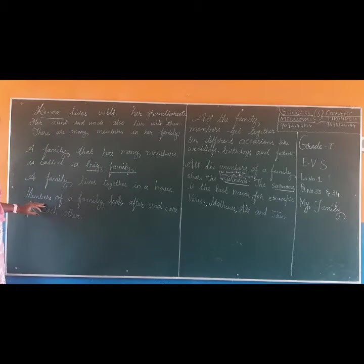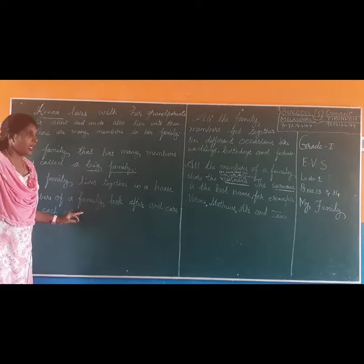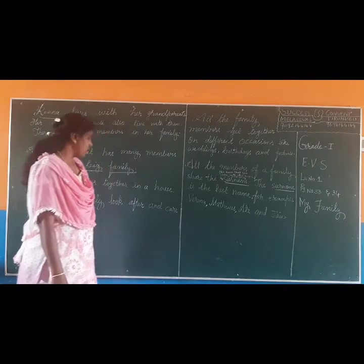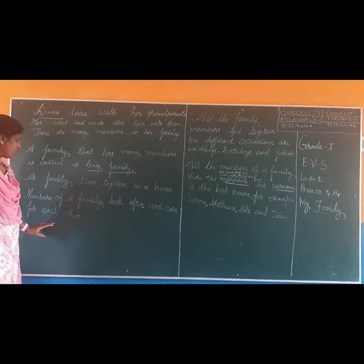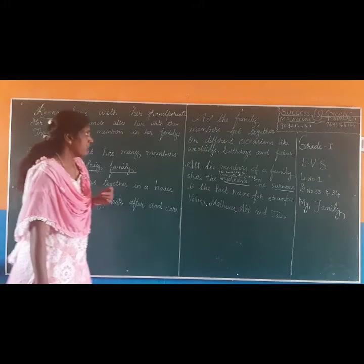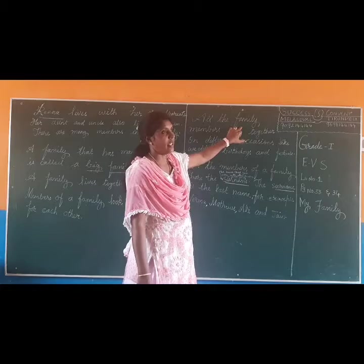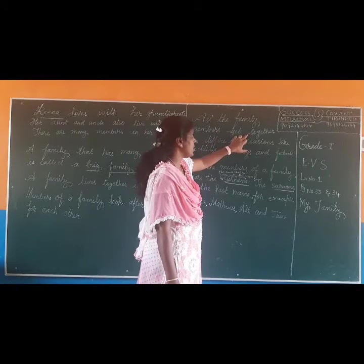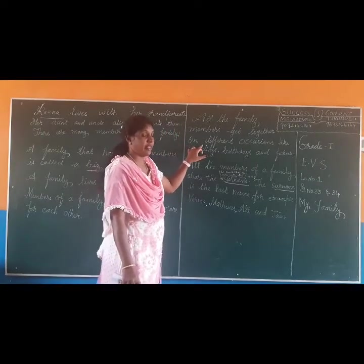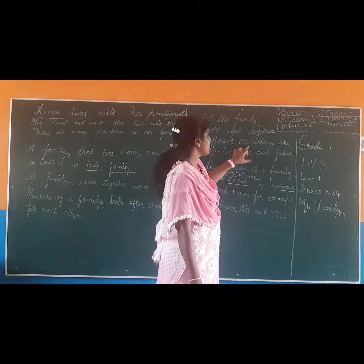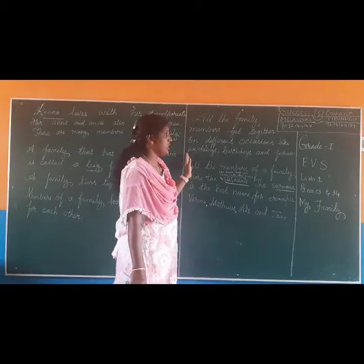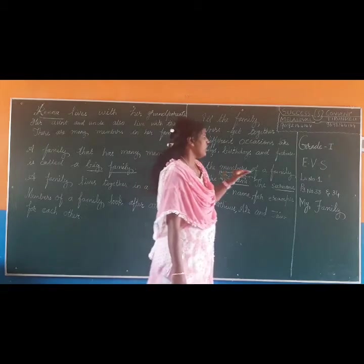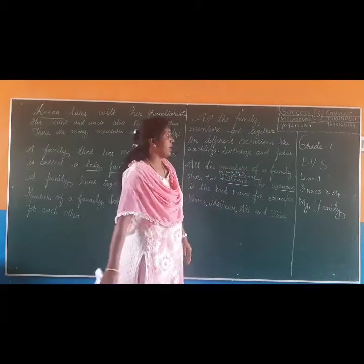Members: M-E-M-B-E-R-S. Of: O-F. A family: F-A-M-I-L-Y. Look: L-O-O-K. After: A-F-T-E-R. And: A-N-D. Care: C-A-R-E. For: F-O-R. Each: E-A-C-H. Other: O-T-H-E-R. Full stop. All: A-L-L. The: T-H-E. Family: F-A-M-I-L-Y. Members: M-E-M-B-E-R-S. Get: G-E-T. Together: T-O-G-E-T-H-E-R. On: O-N. Different: D-I-F-F-E-R-E-N-T. Occasions: O-C-C-A-S-I-O-N-S. Like: L-I-K-E. Weddings: W-E-D-D-I-N-G-S. Birthdays: B-I-R-T-H-D-A-Y-S. And: A-N-D. Festivals: F-E-S-T-I-V-A-L-S. Full stop.